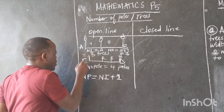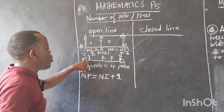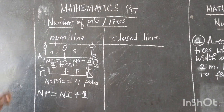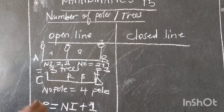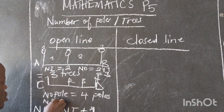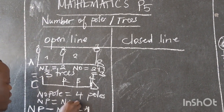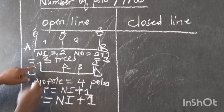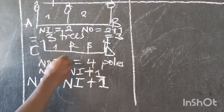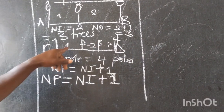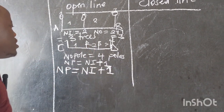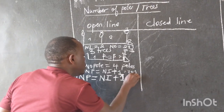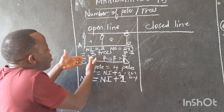If we go to this example, we have four poles — one, two, three, four. How do we find these poles? The number of poles is equal to the number of intervals plus one. Here the number of intervals is one, two, three. The number of intervals is equal to three plus one, which equals four.